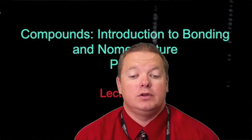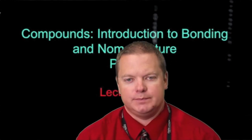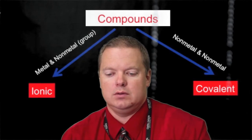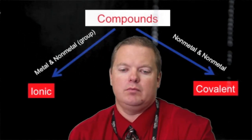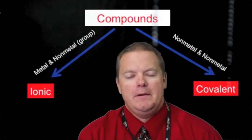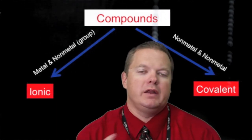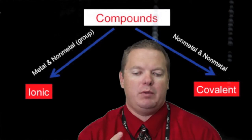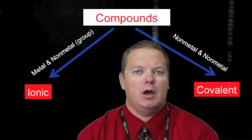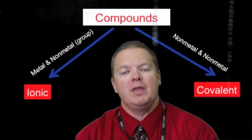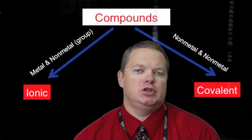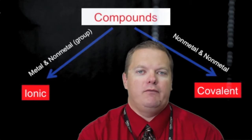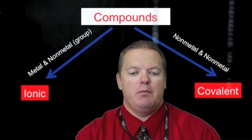Lecture number eight, part two of the introduction of bonding to nomenclature. In the last lecture we talked about the bonding that occurs between compounds and how to name them. We talked about whether it's a nonmetal-nonmetal combination forming a covalent bond, which we name in one convention, or a metal and nonmetal forming an ionic bond, and how we name those.